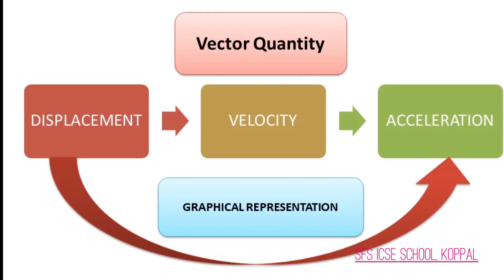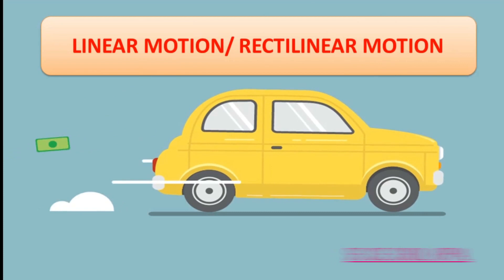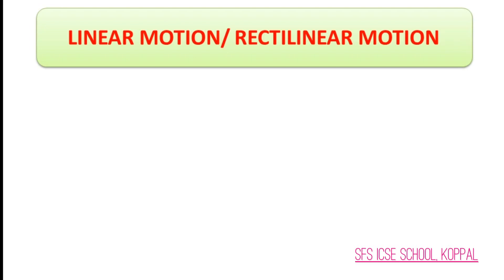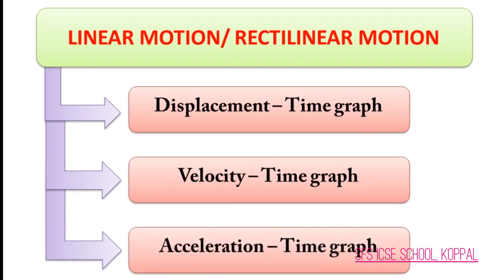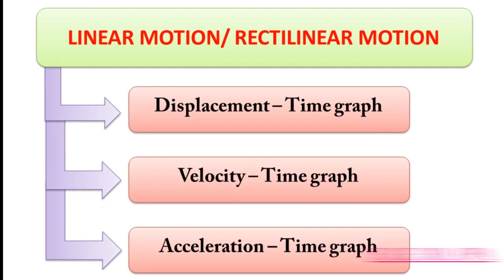What is linear motion? When a body is moving in a straight line path, the motion of that body is called linear motion. It can also be called rectilinear motion. This linear or rectilinear motion can be analyzed with the help of three types of graphs: number one displacement-time graph, number two velocity-time graph, and number three acceleration-time graph. Please note: when motion of a body is linear, the direction does not change, so displacement-time graph and distance-time graph are the same. Similarly, velocity-time graph and speed-time graph are the same. In any graph we discuss today, time will be plotted on the x-axis.